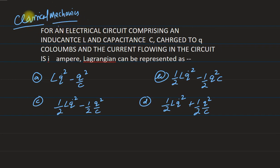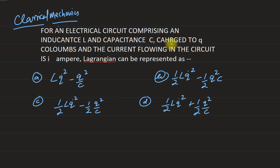Good day, students. Here I am going to solve one problem from classical mechanics related to the Lagrangian equation. We have an electric circuit comprising an inductance L and capacitance C — basically an LC circuit — with charge Q coulombs and current flowing in the circuit of I amperes.